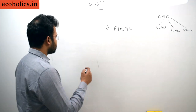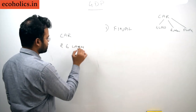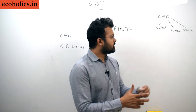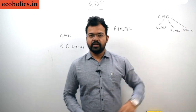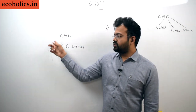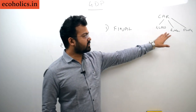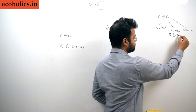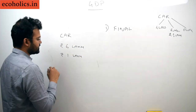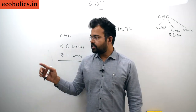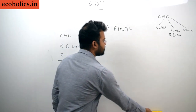Suppose a car costs around 6 lakh rupees. That price already includes the cost of glass, rubber, plastic, etc. So in the calculation of GDP we only take the price of the car. If we also included the rubber cost of 1 lakh separately, it would lead to double counting, because that 1 lakh is already included in the price of the car. So we do not include intermediate goods in terms of final value.